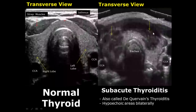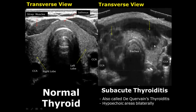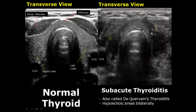Subacute thyroiditis, which is also known as De Quervain's thyroiditis, involves both lobes of the thyroid bilaterally. We will see hyperechoic regions in both thyroid lobes. Here is another case of subacute thyroiditis showing hyperechoic areas bilaterally in the right and left lobes.